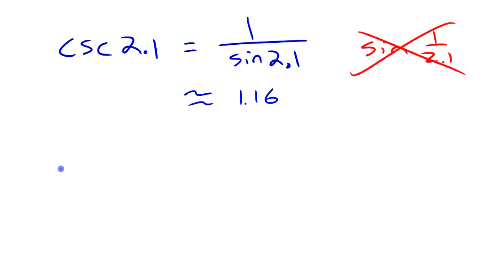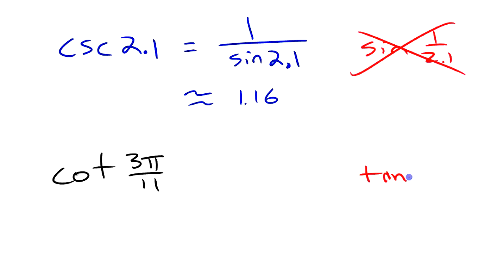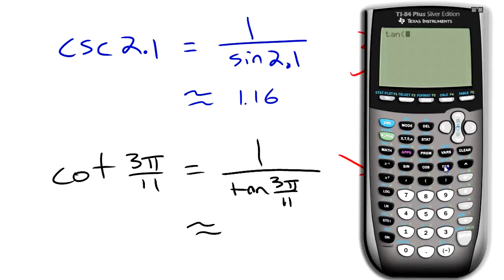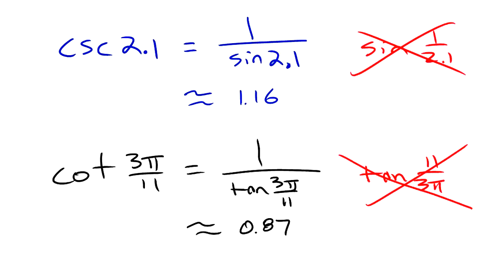Let's try cotangent of 3π over 11. This one tricks people because the angle is a fraction, and it's tempting to flip it over — but as we just saw, you don't flip the angle. This is not tangent of 11 over 3π. It's 1 over tangent of 3π over 11; the angle stays 3π over 11. On the calculator in two steps: tangent of 3π divided by 11 gives about 1.15, then 1 divided by that gives a cotangent of roughly 0.87.